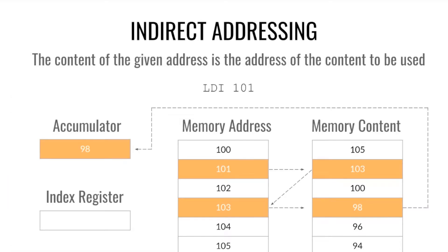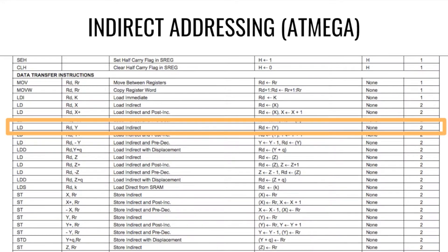Indirect addressing gets its address from the content of the address provided. So with LDI 101 (load indirect 101) we go to address 101, find the address stored there — say 103 — then go to 103 and load that value into the accumulator, which would be 98. Here's the mnemonic for load indirect in the ATmega.